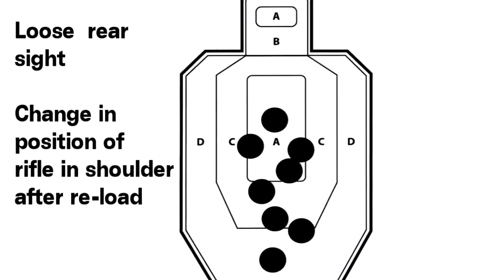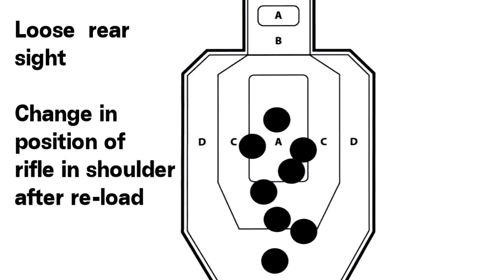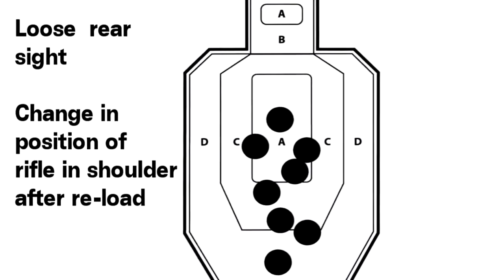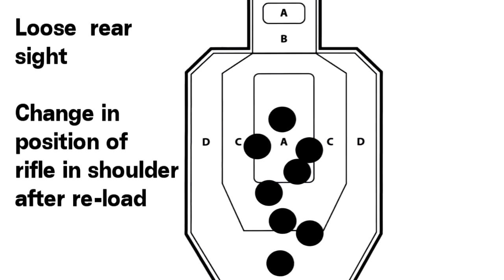Number two: loose rear sight. Number three: too low a position. Number four: changing position of the rifle in shoulder after reload.